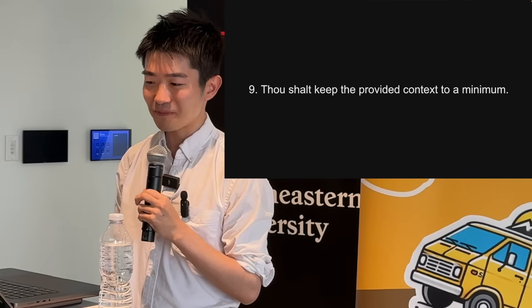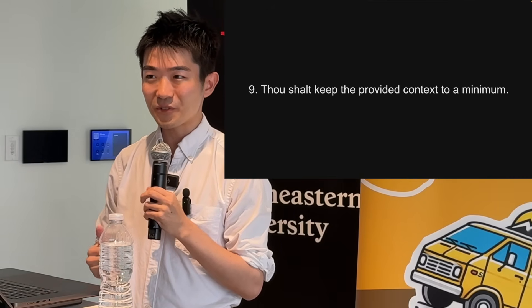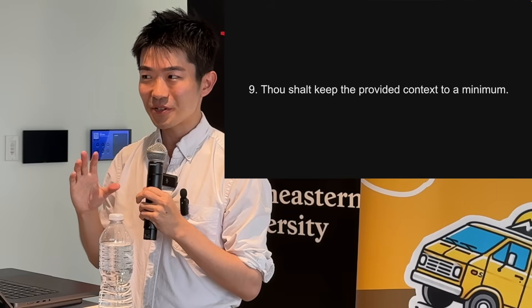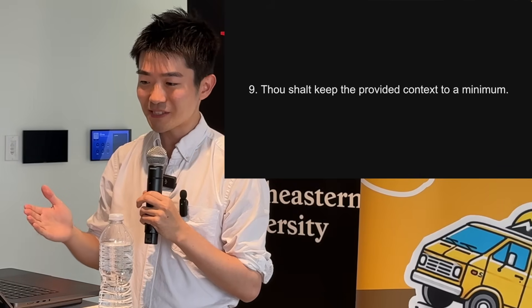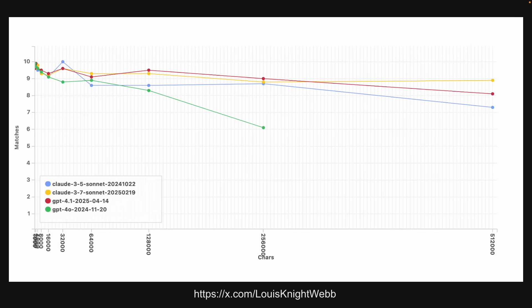Number nine: keep the provided context to a minimum. It's true that you want to provide a lot of context, but only as long as it's relevant. When you try to provide too much context — say 100,000 or 500,000 characters — the performance of AI models starts to go down. When it's too long, it won't be able to fully utilize the given context. The latest models handle longer context better, but it's still a good rule of thumb to keep context minimal while still providing what's relevant.